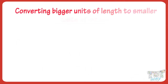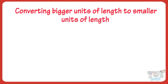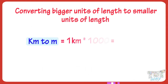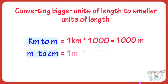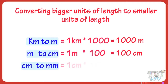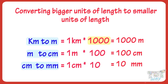Kids, whenever we convert bigger units to smaller units — like kilometers to meters, meters to centimeters, centimeters to millimeters — we multiply. When we convert kilometers to meters, we multiply by 1,000. When we convert meters to centimeters, we multiply by 100. When we convert centimeters to millimeters, we multiply by 10.